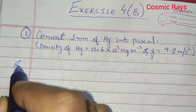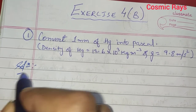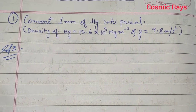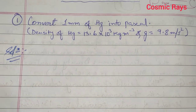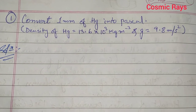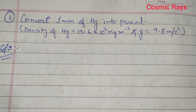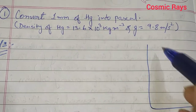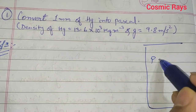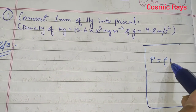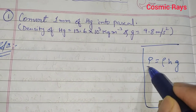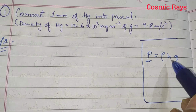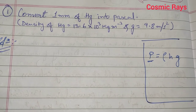For the first question, it says convert 1 millimeter of Hg into Pascal. In this exercise we will mainly be using one formula: pressure is equal to rho H g, where P is the pressure, rho is the density of the liquid, H is the height or depth, and g is the acceleration due to gravity.